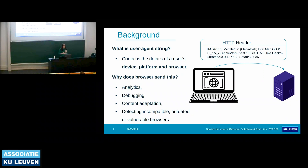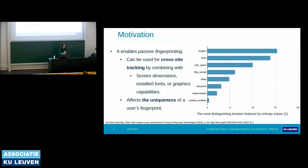Today's user agent string contains very detailed information about the user's device and platform. As you can see here, in every HTTP request, our browser sends the user agent string in the HTTP header to the web server to inform which device, which platform, and which browser the client is using. User agent string can be used for different purposes such as analytics, debugging, or content adaptation. In addition to these legitimate uses, it can also be used for stealthy cross-site tracking through browser fingerprinting with other browser features such as screen dimension or installed plugins.